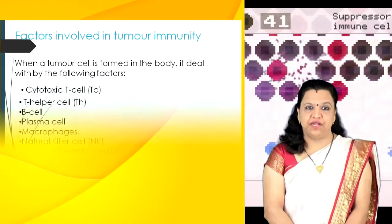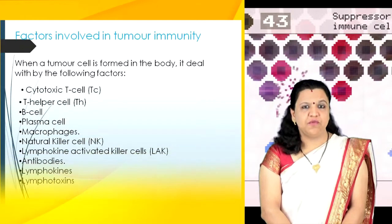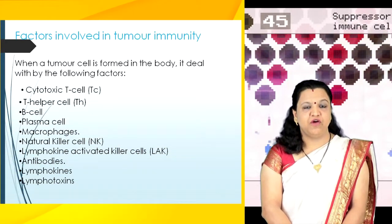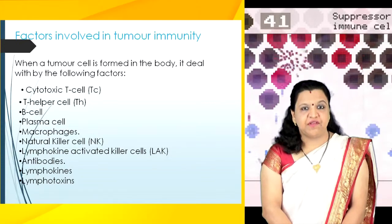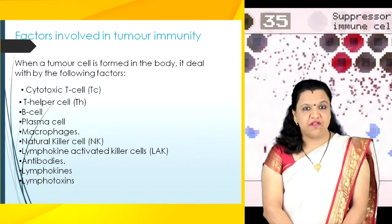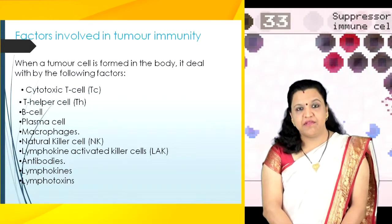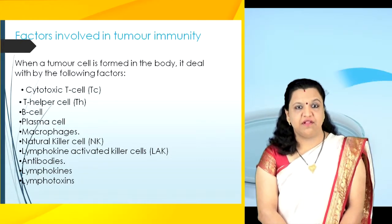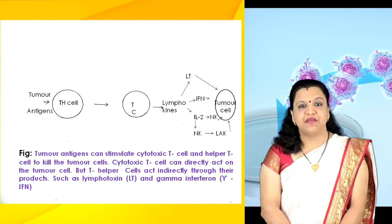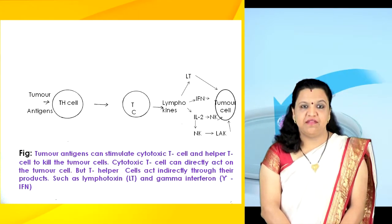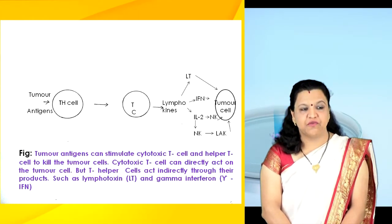There are many factors involved in tumor immunity. When a tumor cell is formed in the body, it is dealt with by the following factors: cytotoxic T cells, T helper cells, B cells, plasma cells, macrophages, natural killer cells, lymphokine activated killer cells, antibodies, lymphokines, and lymphotoxins.